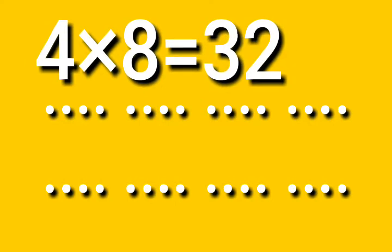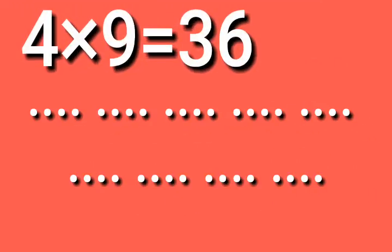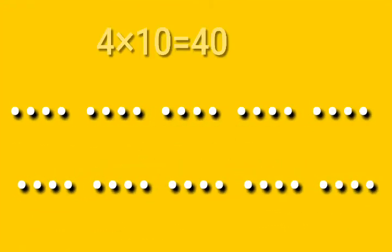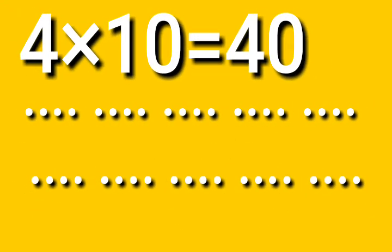Four eight's are thirty-two. Four nine's are thirty-six. Four ten's are forty.